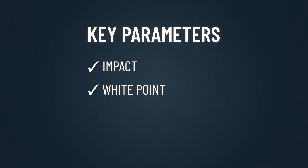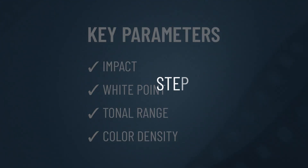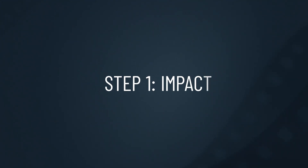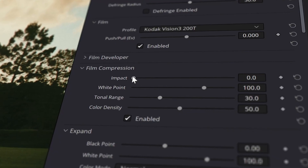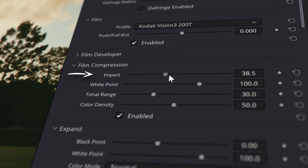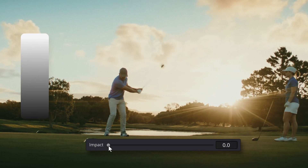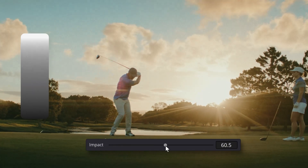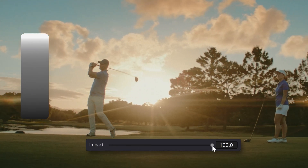First is Impact, White Point, Tonal Range, and Color Density. Let's begin with Impact. This parameter determines the degree of compression. The higher the impact value, the more the highlights are pushed towards the midtones.